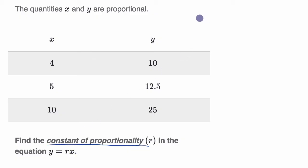All right, so we want to find the constant of proportionality, r, where for any x, if I multiply it by r, I get y.